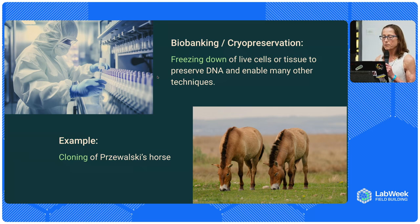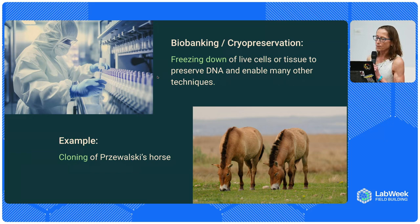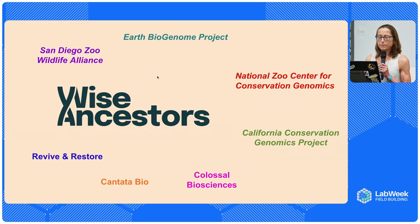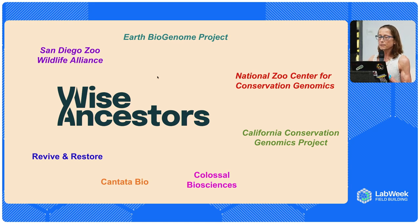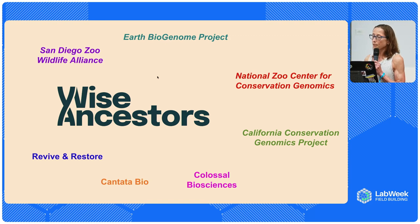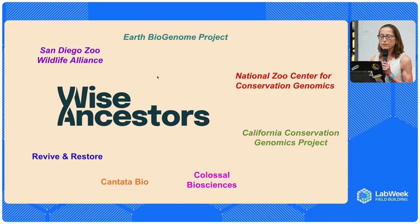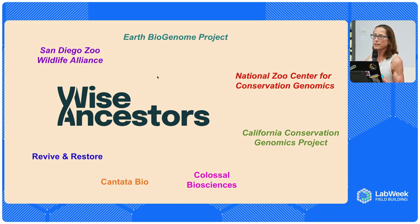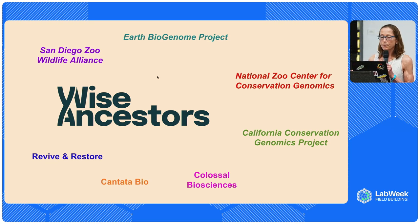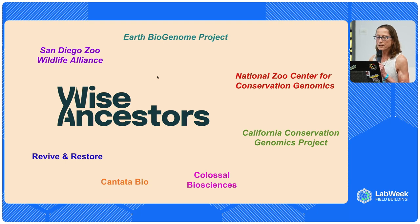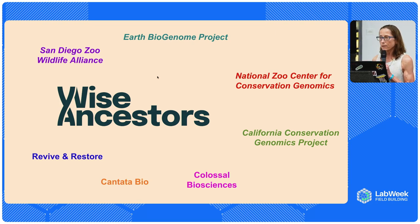Those are two examples of applying biotechnologies to conservation of species, and there are actually lots of other ways genomics is being utilized. A number of conservation organizations, zoos, and academic labs are doing this kind of work all over the world. The largest of these is the Earth Biogenome Project, a consortium of 58 projects with the goal of sequencing all of Earth's eukaryotic biodiversity in 10 years. We were recently approved to be one of the affiliates. It's being called a Moonshot for Biology, and it is really needed because less than 1% of known species have been sequenced to date.